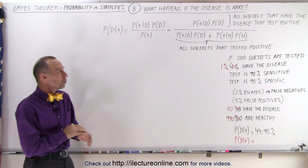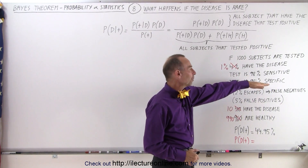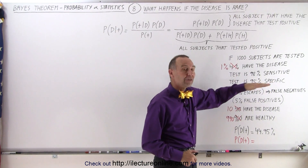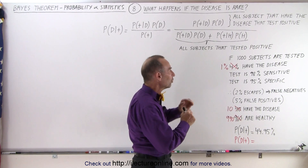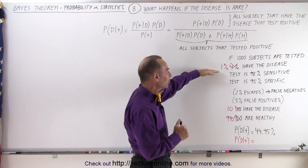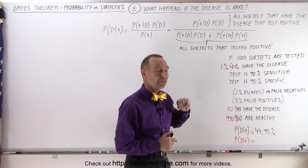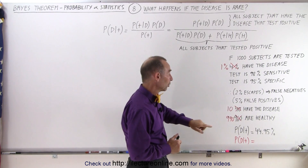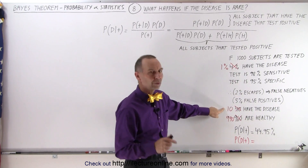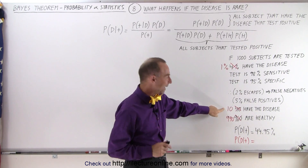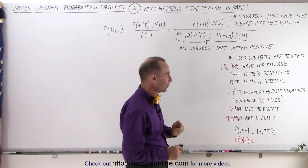What we're going to do here is keep the sensitivity and the specificity of the test exactly the same. But what we're changing now is the number of subjects that actually have the disease drops from 4% down to 1%. In other words, instead of having 40 out of a thousand with the disease, it now goes down to just 10, and therefore 990 of them are healthy.